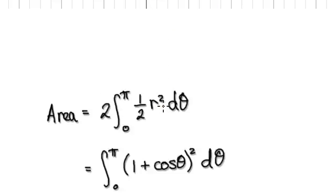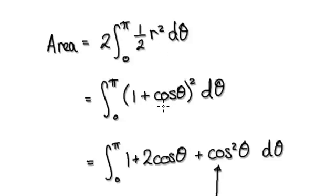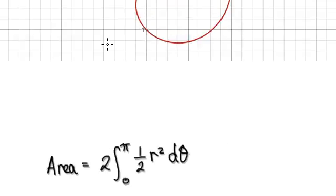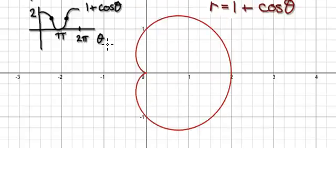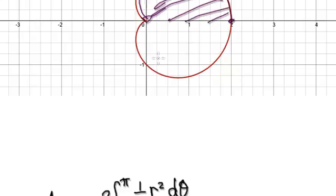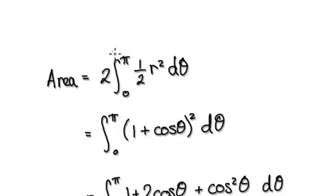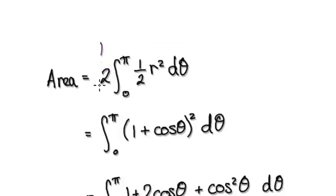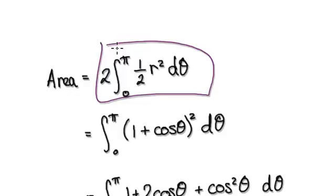The area will be given by this formula. We are going to work out from 0 to pi — that's this area here — and then multiply it by 2. So we can then times it by 2. The area is given by this expression.